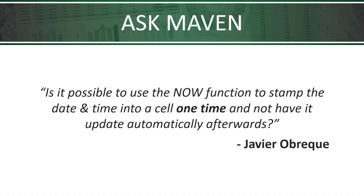For this question, Javier Obreque reached out to us via the chat on the Maven site and asked: is it possible to use the NOW formula to stamp the date and time into a cell one time and not have it update automatically afterwards?